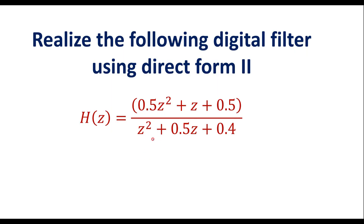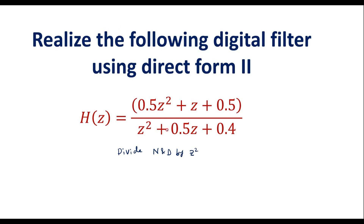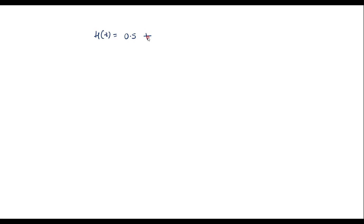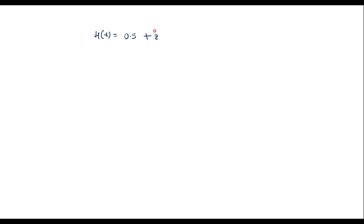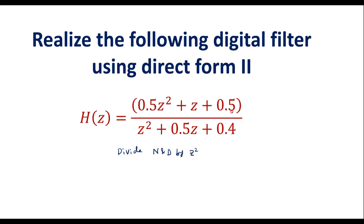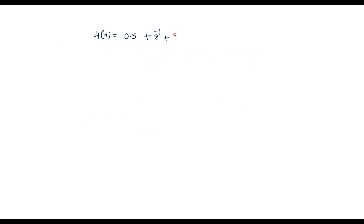We will divide the numerator and denominator by Z squared. So H(Z) in the numerator gives: 0.5 Z squared divided by Z squared is 0.5, plus Z divided by Z squared is Z inverse, plus 0.5 divided by Z squared which is 0.5 Z power minus 2.